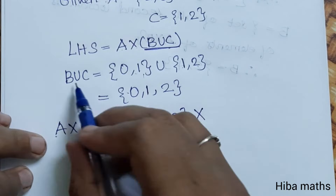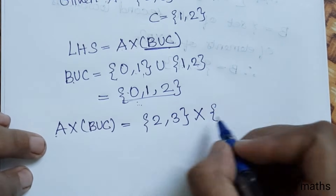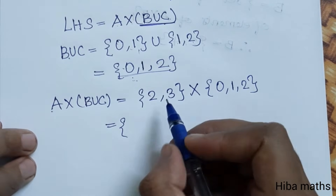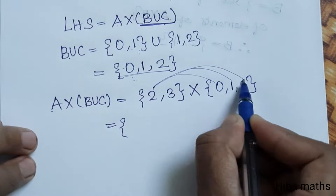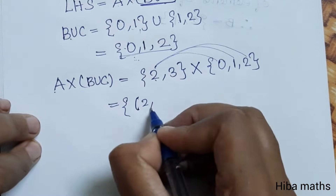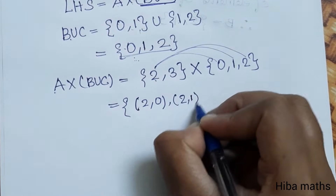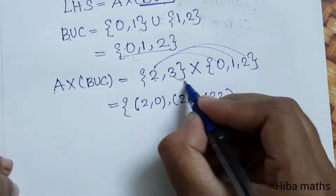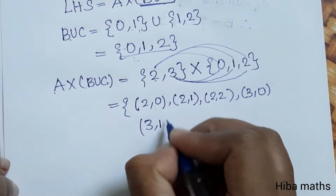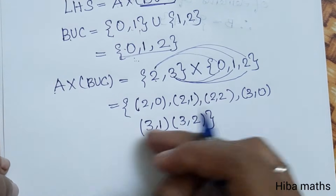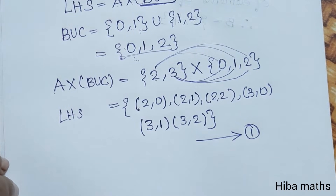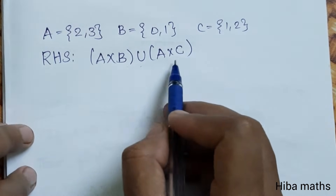A = {2, 3}. B union C: B = {0, 1} and C = {1, 2}, so B union C = {0, 1, 2}. Now A cross (B union C) = {2, 3} cross {0, 1, 2}. The pairs are: (2,0), (2,1), (2,2), (3,0), (3,1), (3,2).